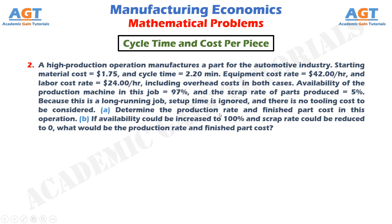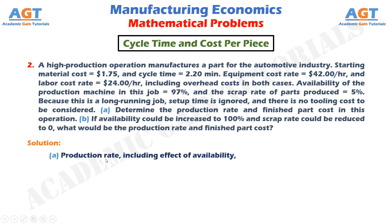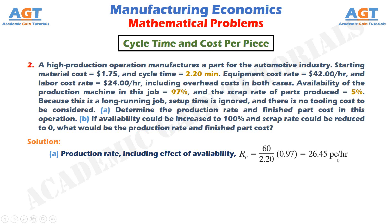Part A: Determine the production rate and finished part cost in this operation. The equation for production rate including effective availability is: Rp equals 60 divided by Tp, multiplied by availability A. Putting in the values, we get a production rate of 26.45 pieces per hour including effective availability.